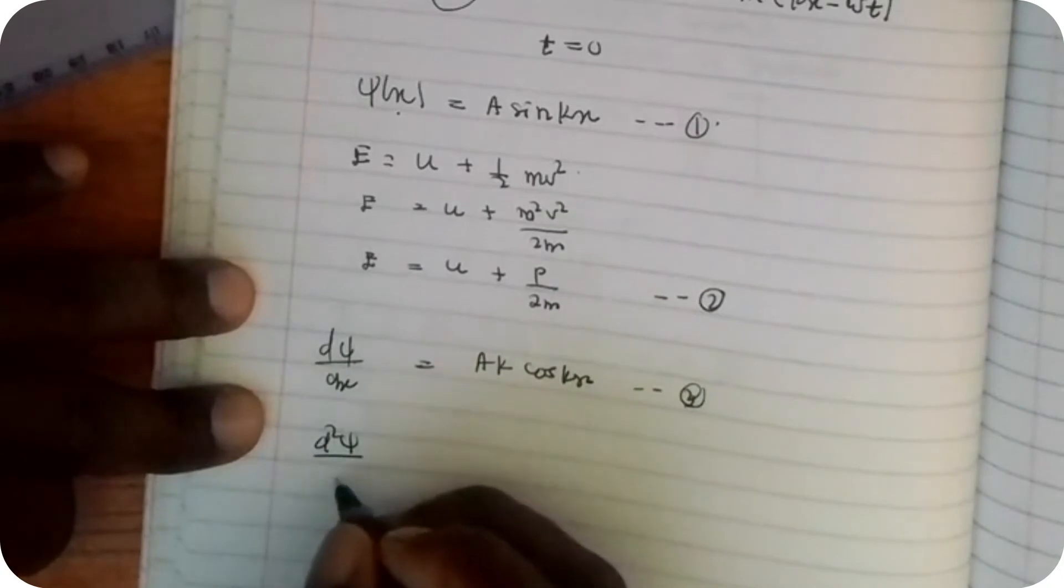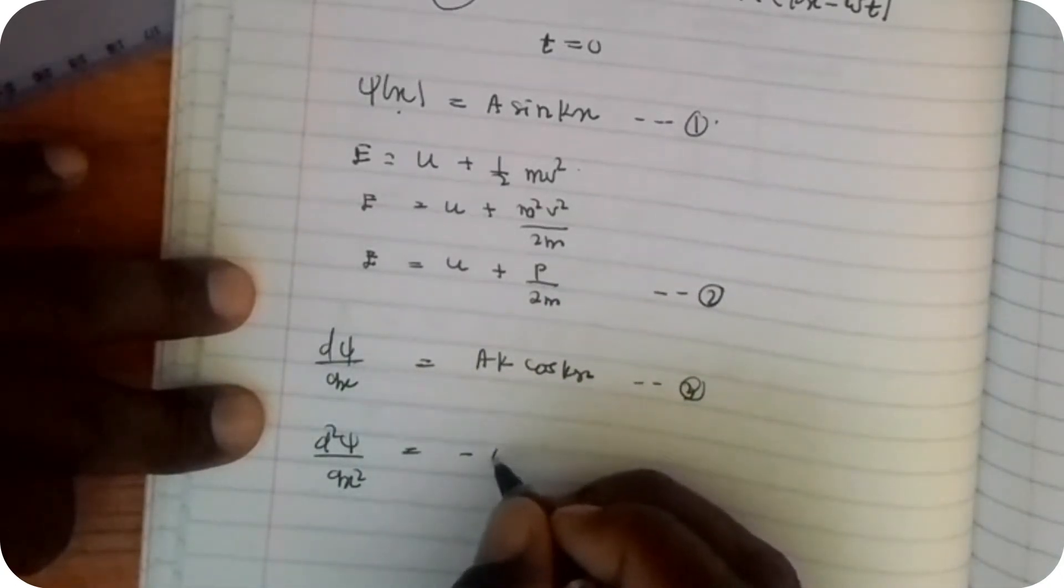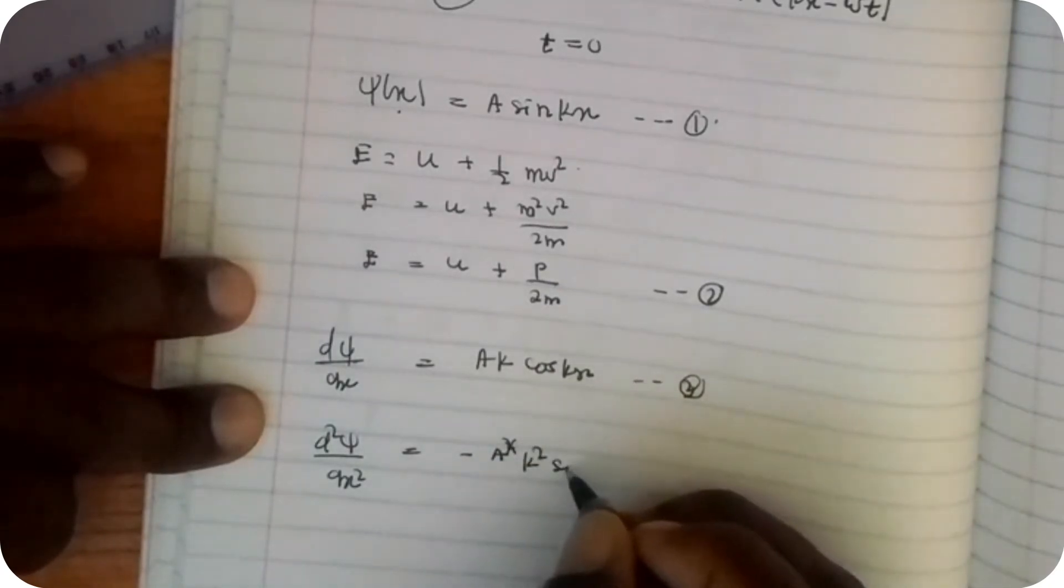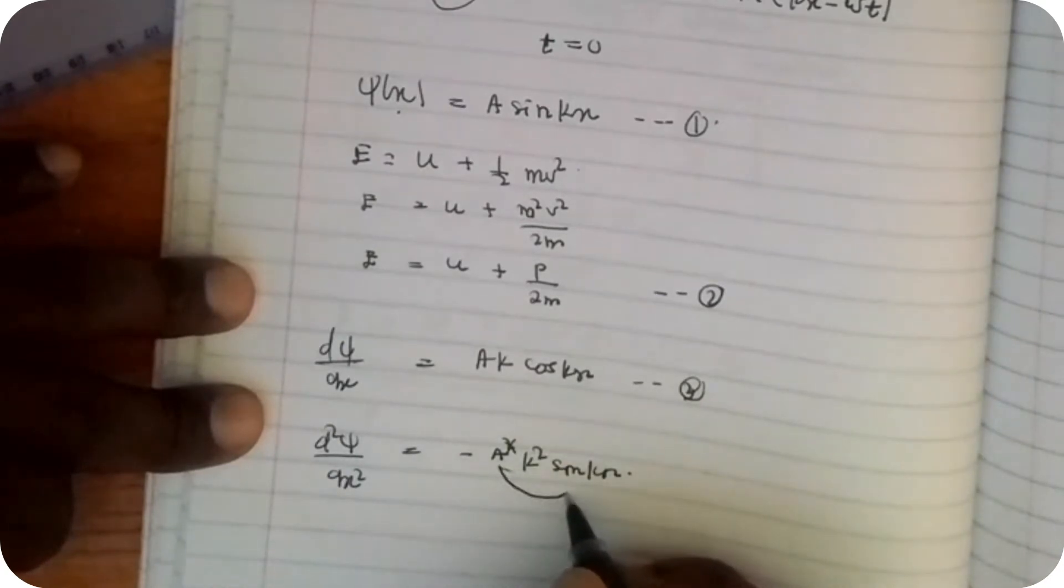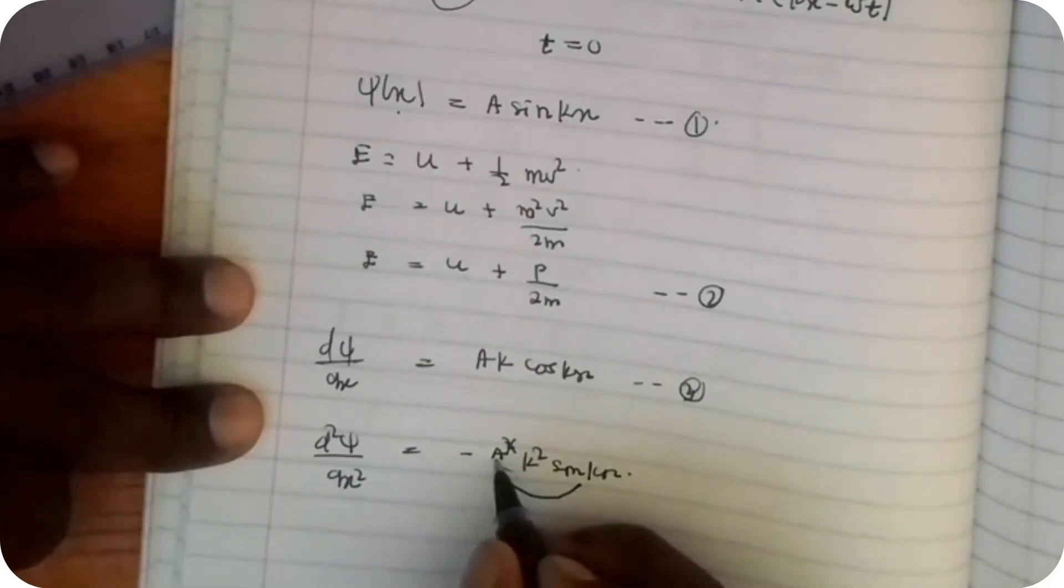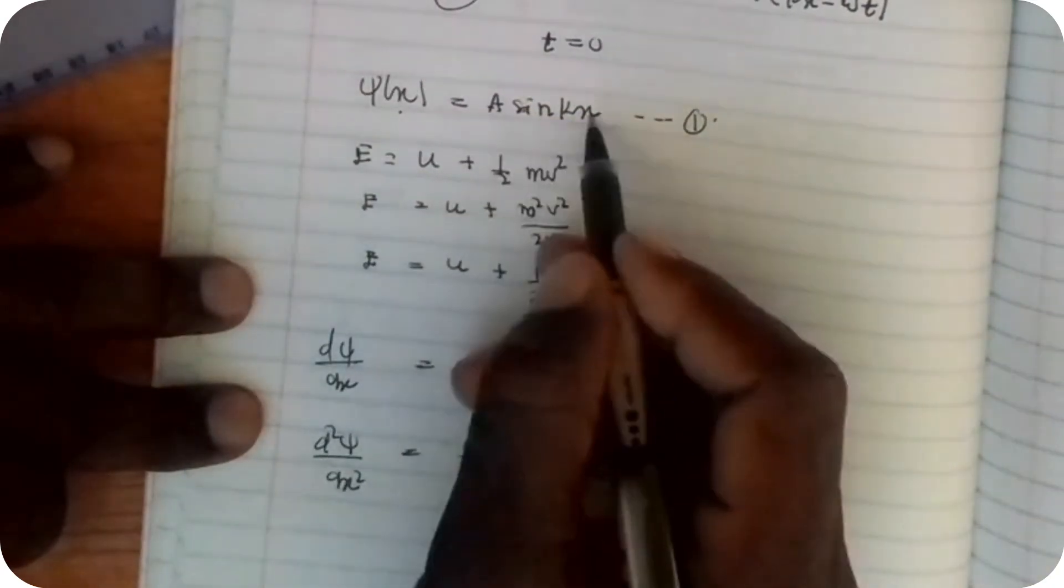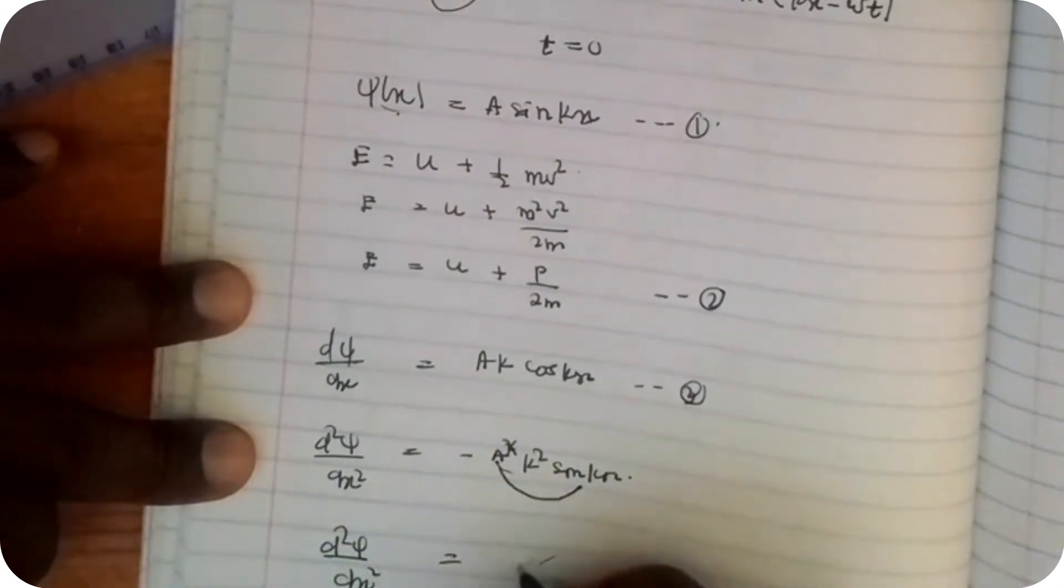d²ψ/dx² equals -Ak² sin(kx). But what is A sin(kx) from equation 1? A sin(kx) is given by ψ.